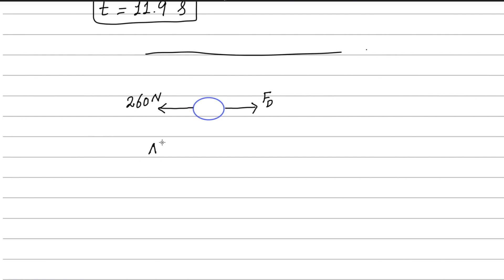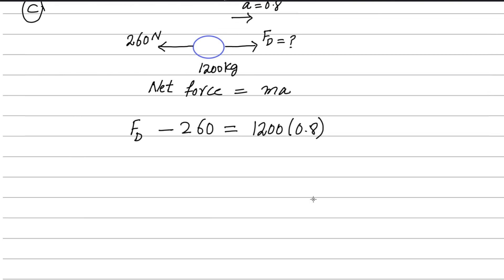These are two forces acting on the van: driving force and 260. By Newton's second law we can write net force equals ma. Acceleration is 0.8, we already found. Acceleration during the motion remains constant. Ft minus 260 N equals mass, 1200 kg, times acceleration 0.8. Ft can be found from here.